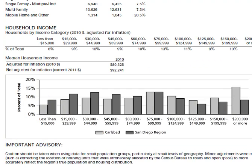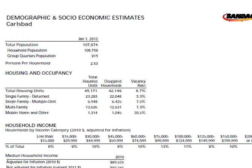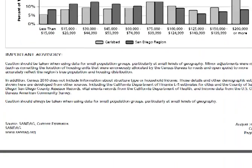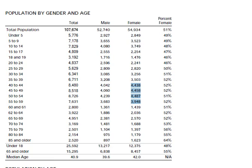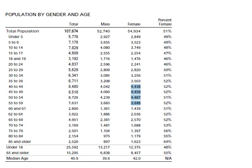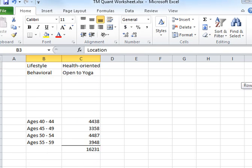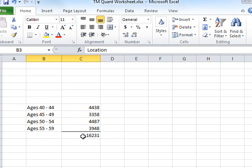When we get that profile, this is what it looks like. We start by looking at the big-picture population for the city — it tells us about housing units, income, and population by gender and age. I'm looking at women between the ages of 40 and 60, so I add up these four numbers and put them into my spreadsheet. The total population of women in Carlsbad between the ages of 40 and 60 is 16,231.